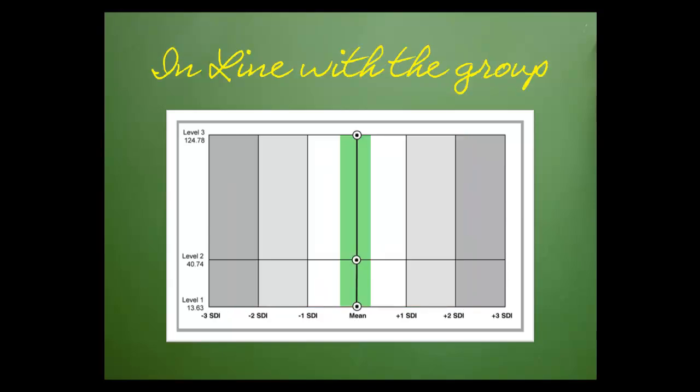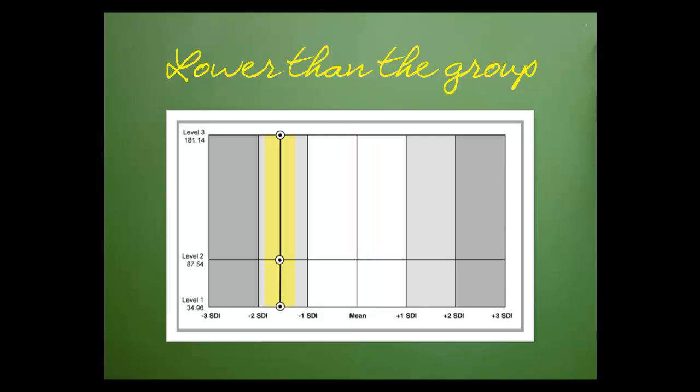The position of the line also provides information. The closer the line is to the center, the better. This indicates that my lab is getting what the peer group is getting. If the line is off to the left, I'm lower than everybody. If the line is off to the right, I'm higher than everybody.